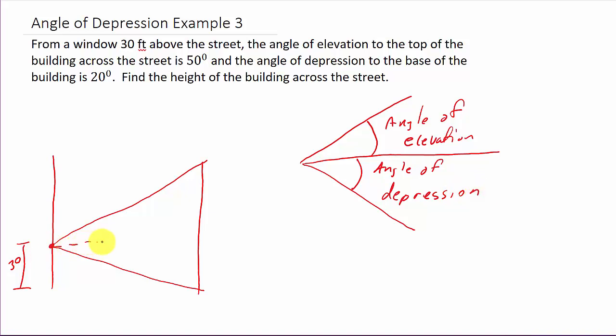All right, so we'll draw a horizontal here. We'll go straight across. And we know that the angle of elevation is 50 degrees, so that's 50 degrees, and we want to know the height of the building.